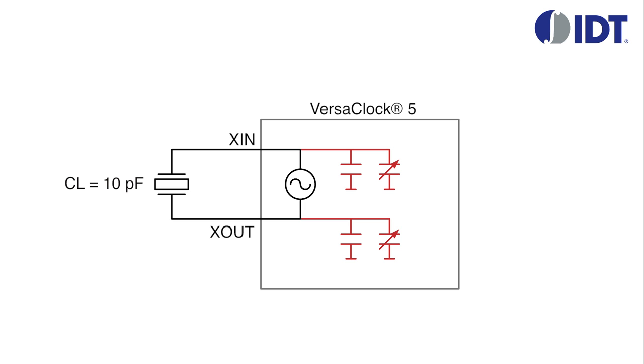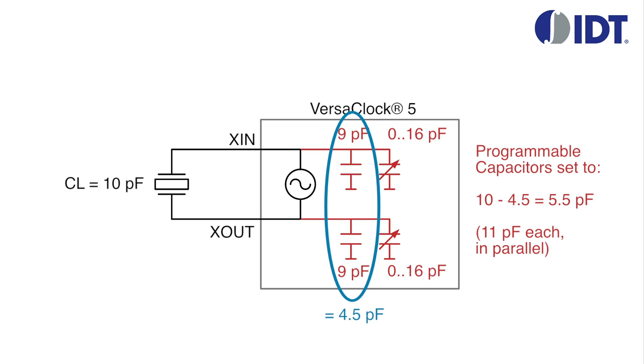The tuning capacitors consist of fixed capacitors of 9 pF each plus variable capacitors in a range of 0 to 16 pF. The fixed capacitors, being in parallel, have an equivalent value of 4.5 pF. To match our 10 pF CL, the variable capacitors need to be set to a value of 5.5 pF. Each internal variable capacitor of the VersaClock 5 will have an actual value of 11 pF.